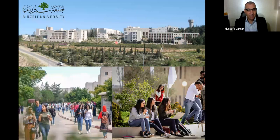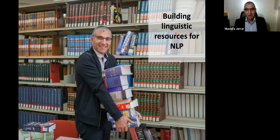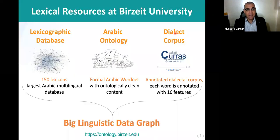This is our campus. We have a beautiful campus on top of a hill. This is how life on campus used to be, but not anymore — it's closed now, no students, and we are teaching over Zoom from home. This is me in the library with some heavy lexicons. Most of our research is focused on building linguistic resources. These are the main linguistic resources we have built so far. We have a lexicographic database which includes about 150 lexicons that we have been digitizing, cleaning, and integrating over 10 years.